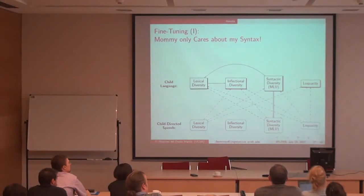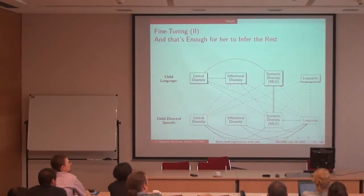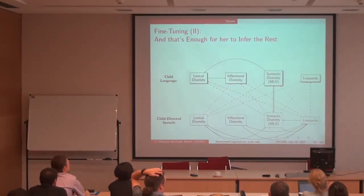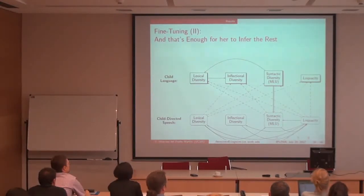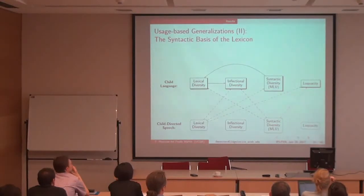When you look at arrows in the other direction, you only find one: the richer the syntax of the child, the richer the syntax of the mother. So there is strong fine-tuning, but it's only happening at the highest level of structure. Why? When you look at arrows within the mother's variables, everything else is fully connected. So if you're paying attention to your child's syntax and adjusting your own language accordingly, you're already fine-tuning the whole system. You only need to care about your baby's syntax, and then you can make the adjustments to your own language.